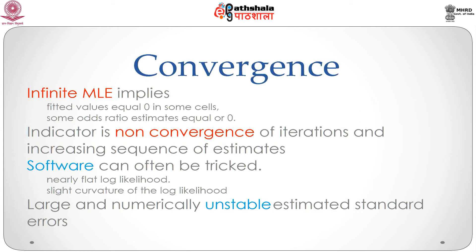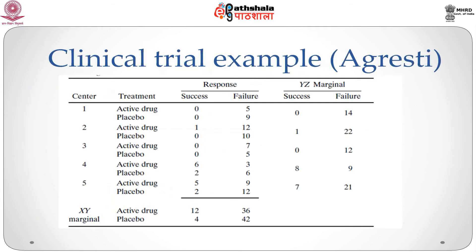Thus, a problem with sparse data is that one might not realise that the true estimated effect is infinite and report highly unstable statistical inference results. Here we see the results of a clinical trial conducted at 5 centres, comparing an active drug to placebo for treating fungal infections. The response is binary (success or failure), where Y denotes response, X denotes treatment, and Z denotes centre. Centres 1 and 3 had zero successes, so the 5×2 marginal table relating response to centre contains zero counts.